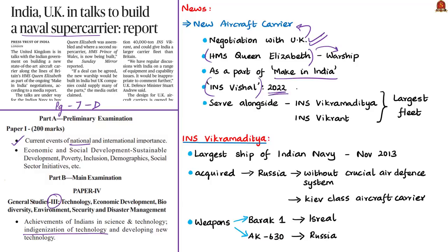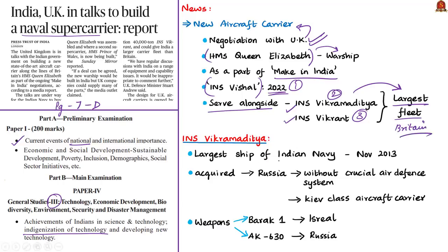The report noted that the new naval carrier would serve alongside India's INS Vikramaditya and the currently under-construction INS Vikrant. Together, INS Vishal, INS Vikramaditya and INS Vikrant would give India a larger carrier fleet than Britain. INS Vikramaditya is the largest ship to join the Indian Navy, commissioned on 16th November 2013. It was acquired from Russia for 2.3 billion dollars. It is a modified Kiev-class aircraft carrier of Russia.